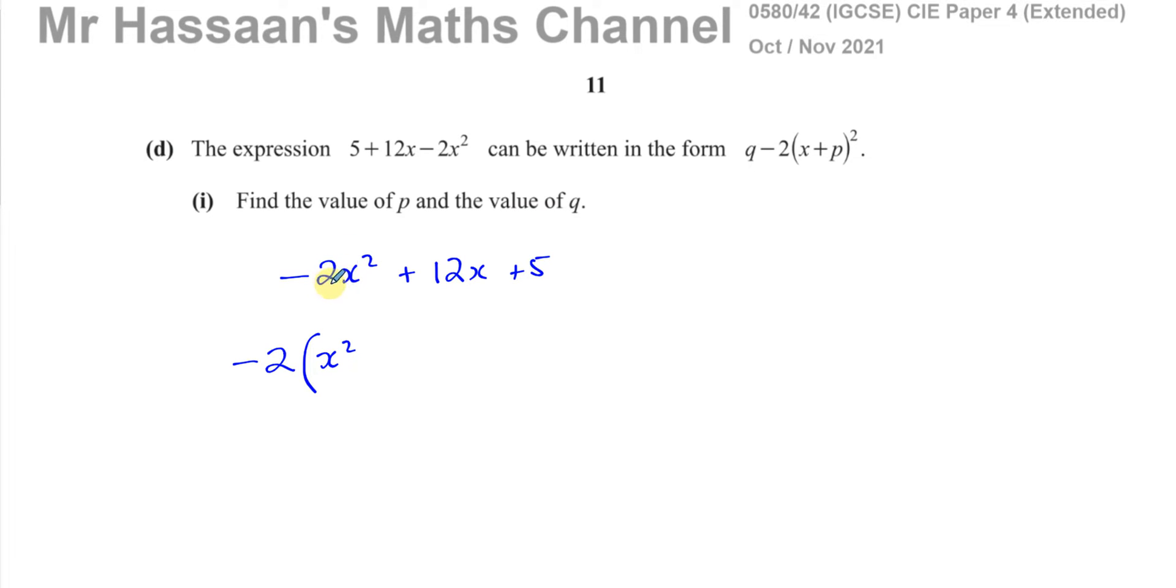So whether the negative 2 or the 2 is a factor of the 12 or not, it doesn't matter. I want to take it out. So whatever number is in front of the x, I have to divide it now by negative 2.